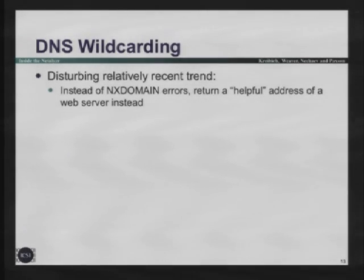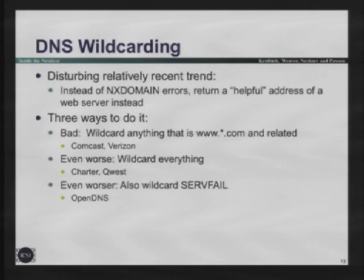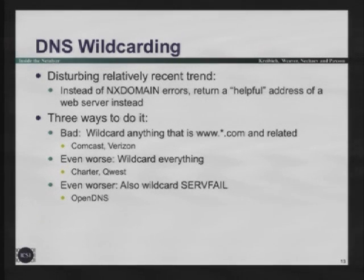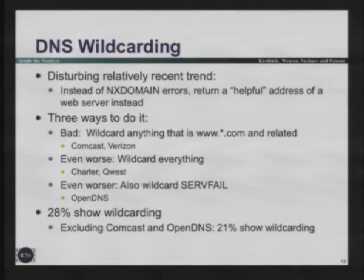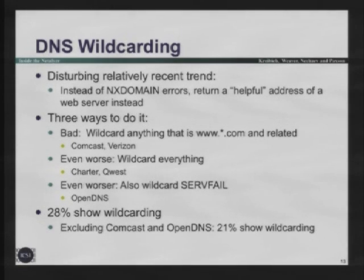DNS wildcarding is unfortunately growing very common - this is that 'helpful' service. There are three ways we've observed it: wildcard everything that's WWW (offenders include Comcast and Verizon), wildcard everything (like Charter and Quest, which causes more collateral damage), and some which wildcard serve-fail. Overall, 28% show wildcarding. Even if we exclude Comcast and OpenDNS, it's still 20%. So anybody relying on DNS returning errors in erroneous situations can't anymore.